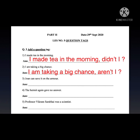Let's see the third one: 'John can save it on the armor.' The auxiliary verb is 'can' — let's take 'can' out. The sentence is positive, so we make it negative. The answer is: 'John can save it on the armor, can't he?'